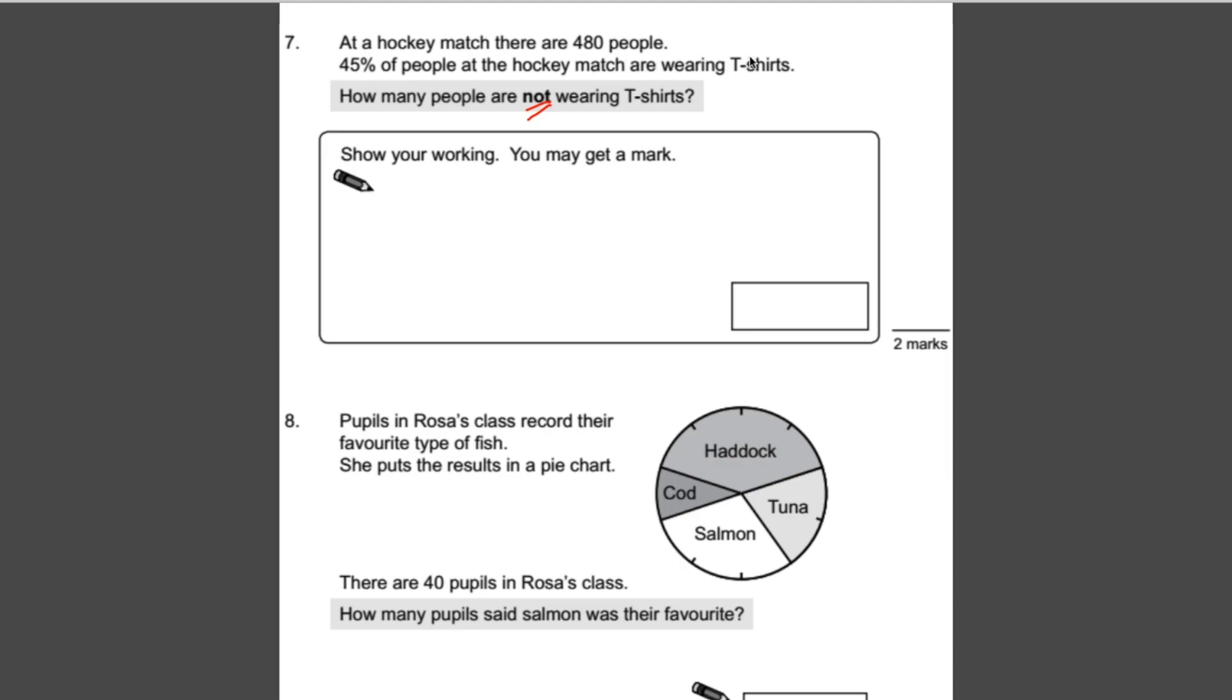First we need to work out how many people are wearing t-shirts. We need to work out what 45% of 480 is. The best thing to do is first work out 10%. 10% of 480 is 48. If I'm going to find 5%, that's going to be half of this, which is 24. Now we can add multiples of 10 and 5 to make 45%. 48 times 4 equals 192. 192 add 24 is 216. So 45% is 216.